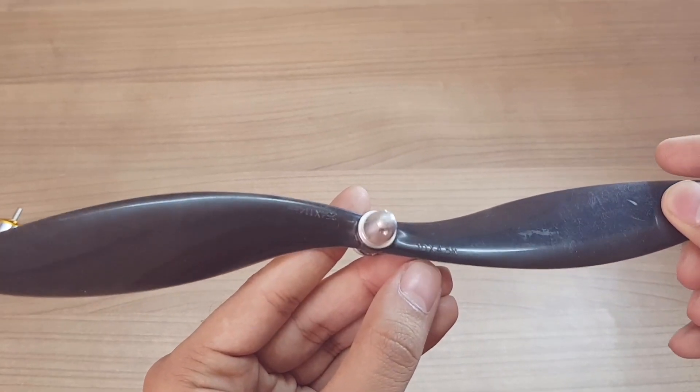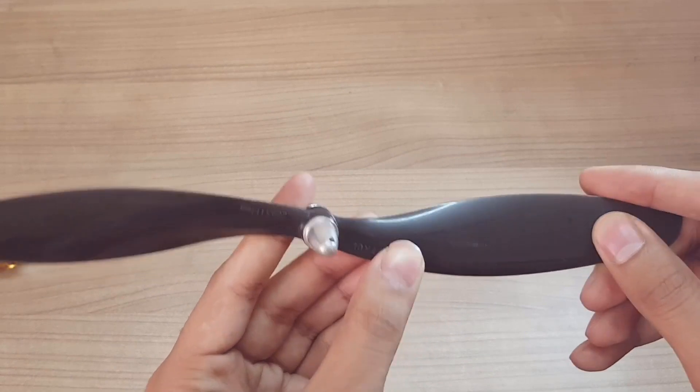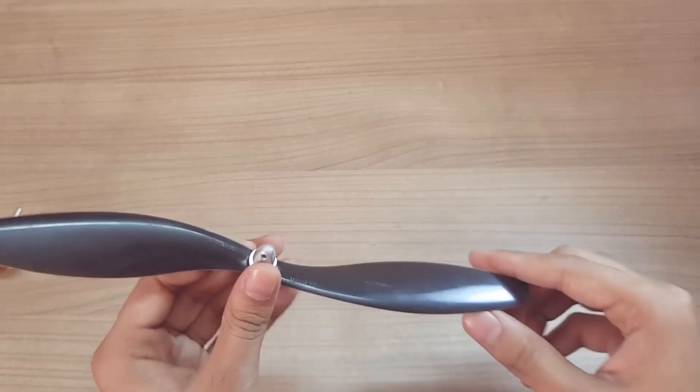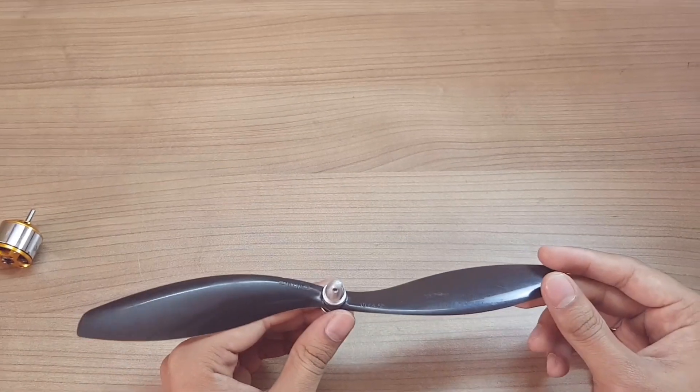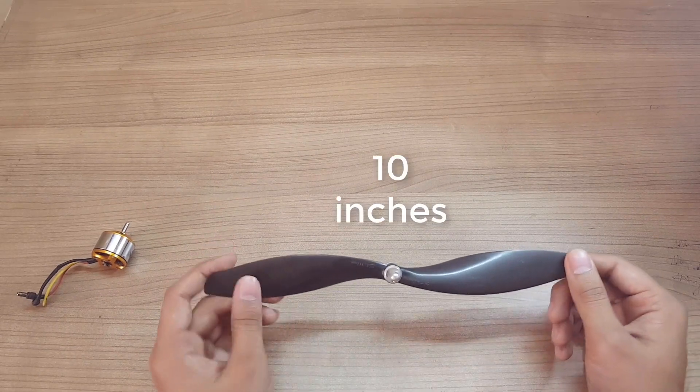For every propeller, the rating will be written. 10 refers in terms of inches - this is the diameter of the propeller. So here we have a 10-inch propeller. The second one is known as pitch, that is 4.5.